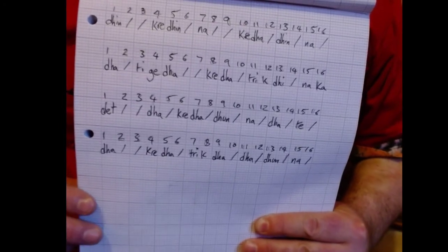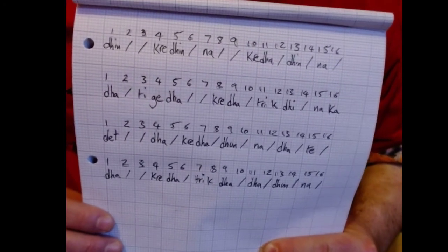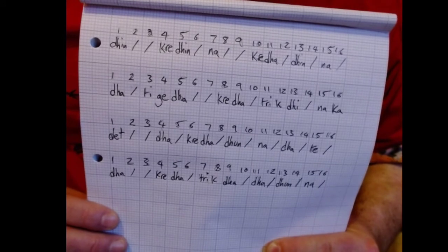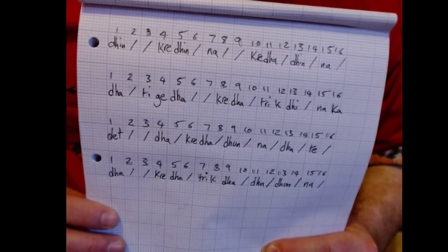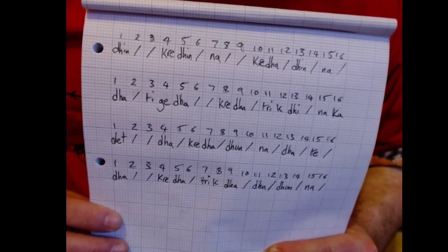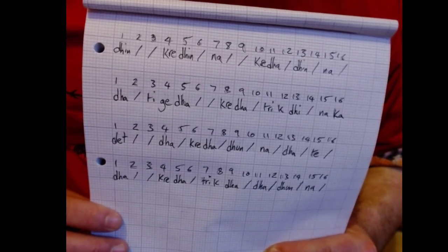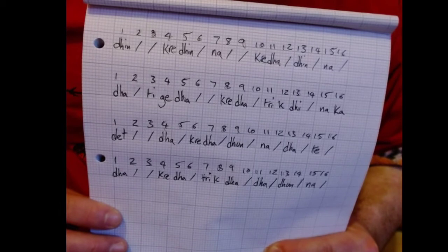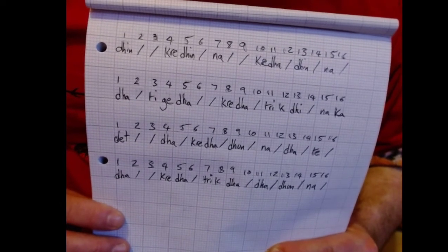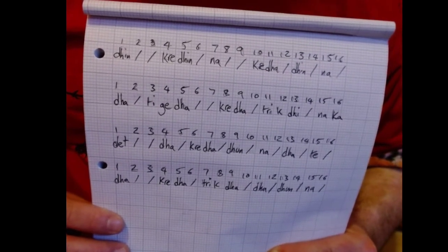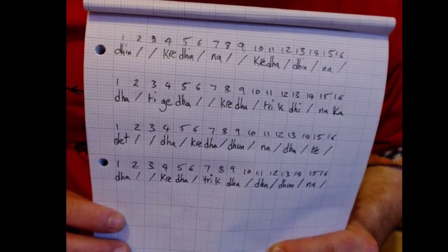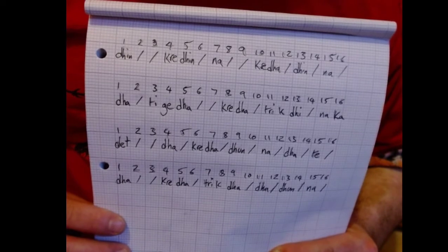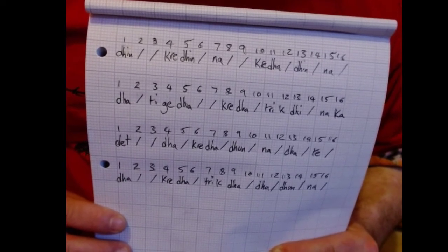Hello. As you can see I've written out the Peshka. This Peshka was originally given out to me from Samir Chatterjee. I've made a few variations on the bols, the Traka and a few Gis here and there. A few Kars here and there have changed. Essentially this is the Peshka I received from Samir Chatterjee.